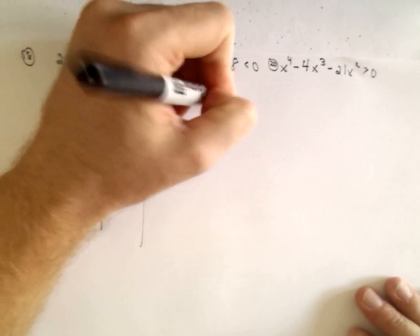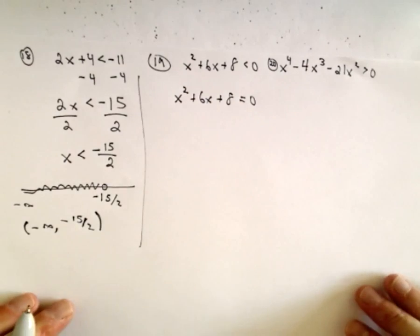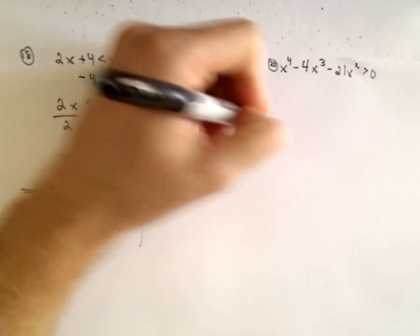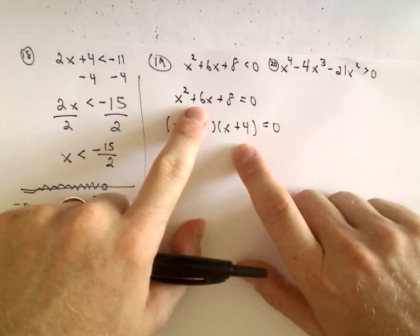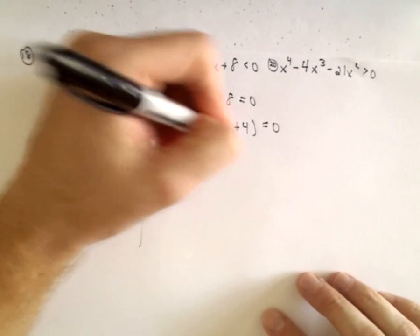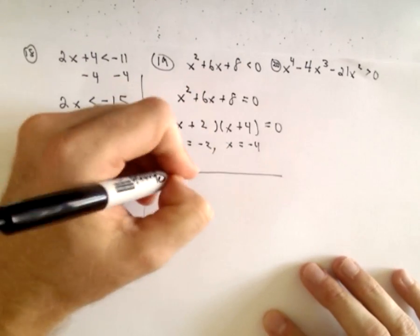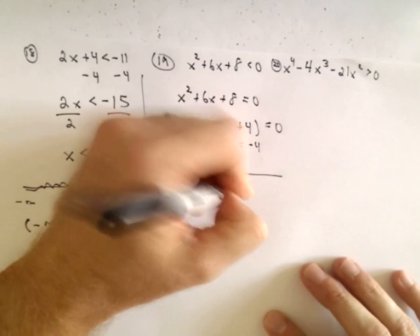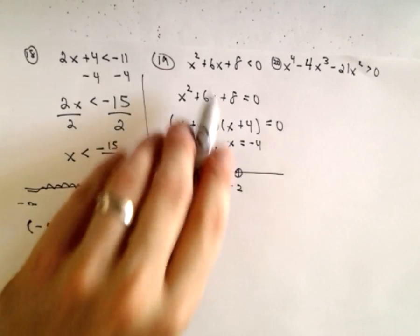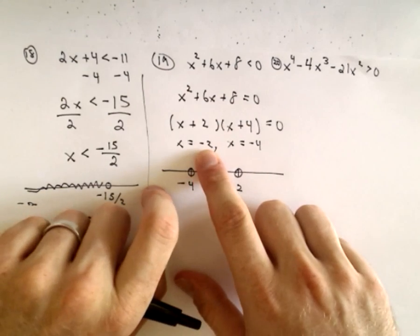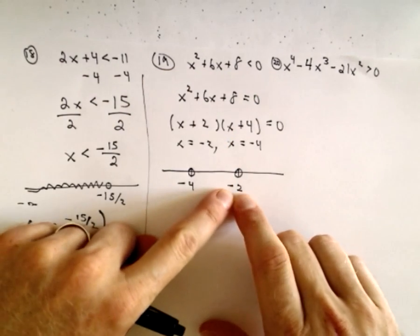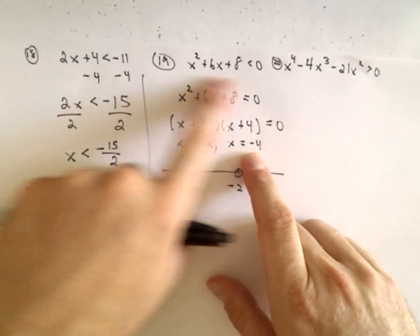I'm going to make it equal to zero first and try to factor it. We can use positive 2 and positive 4 — two numbers that multiply to positive 8 and add up to positive 6. So the solutions to this equation would be x equals negative 2 and x equals negative 4. I'm putting open circles on the number line because if I put negative 2 in, I get exactly zero, and zero is not less than zero. Likewise, negative 4 is not a solution because I get exactly zero there as well.